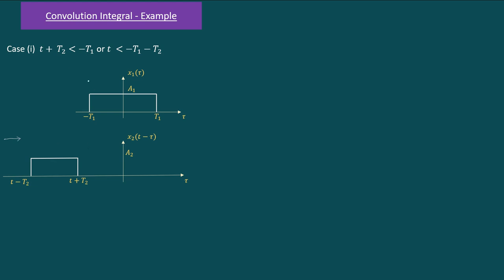At some instant where t + t2 < −t1, that is when t < −t1 − t2, there is no common area between the two signals. The product of the two signals is zero, and hence y(t) = 0 for this case.